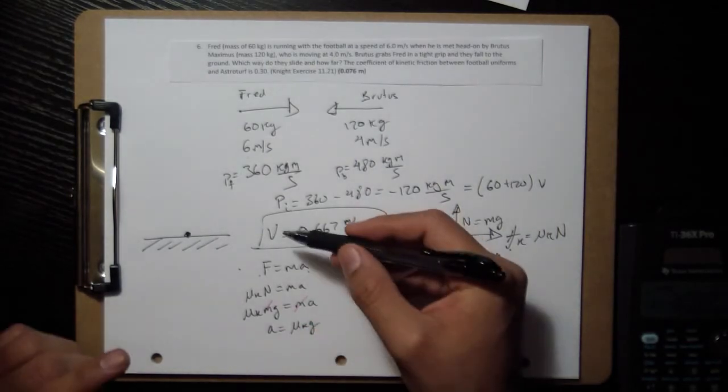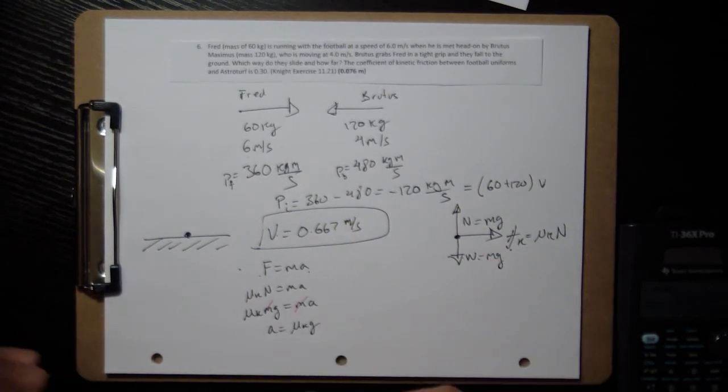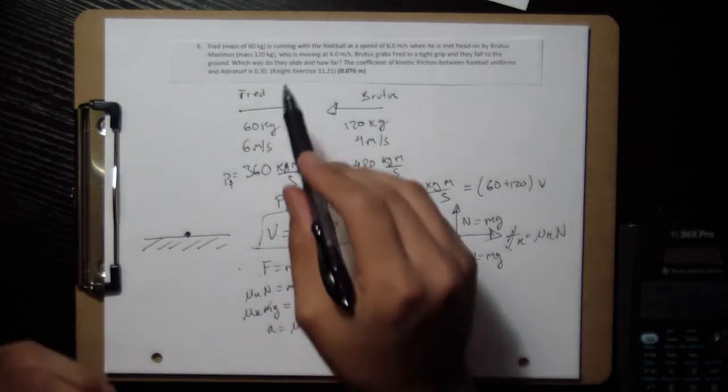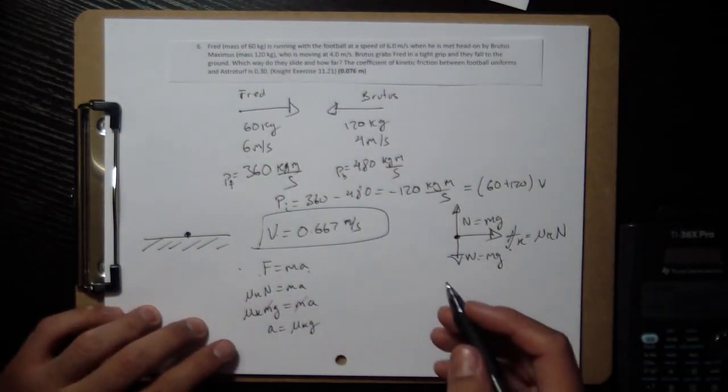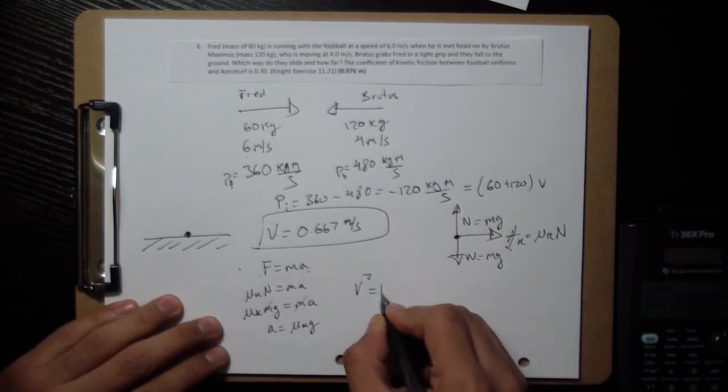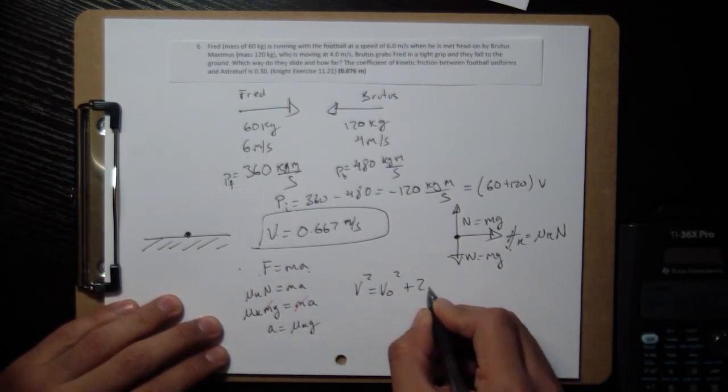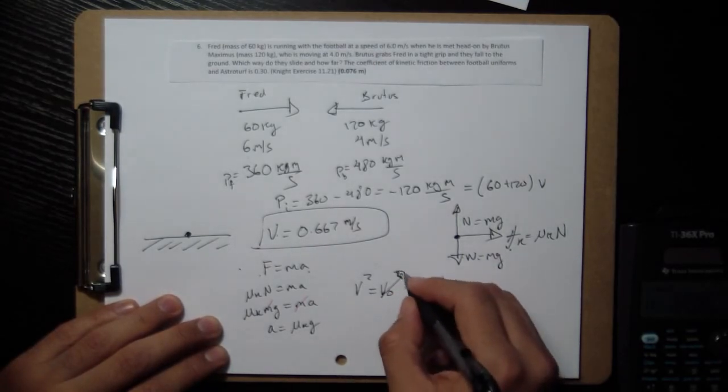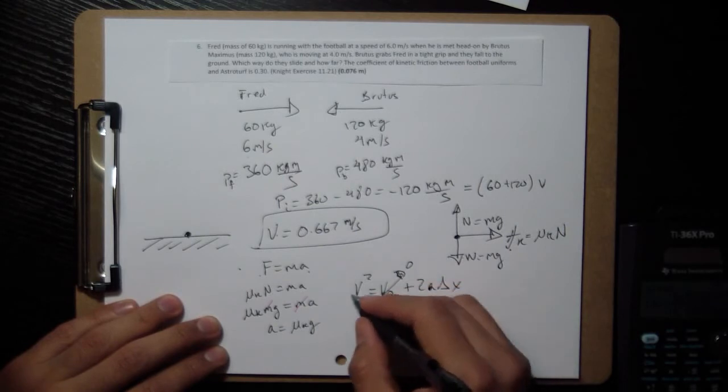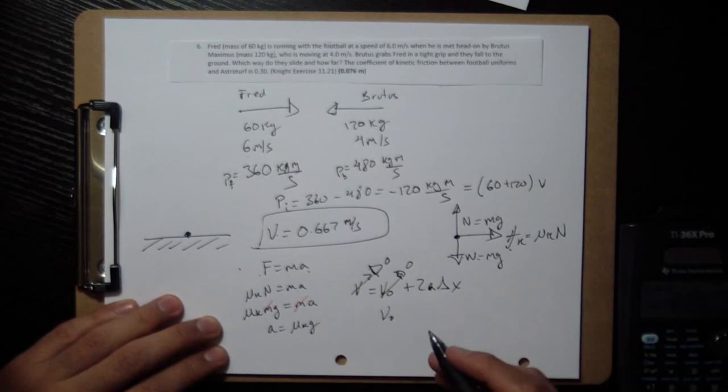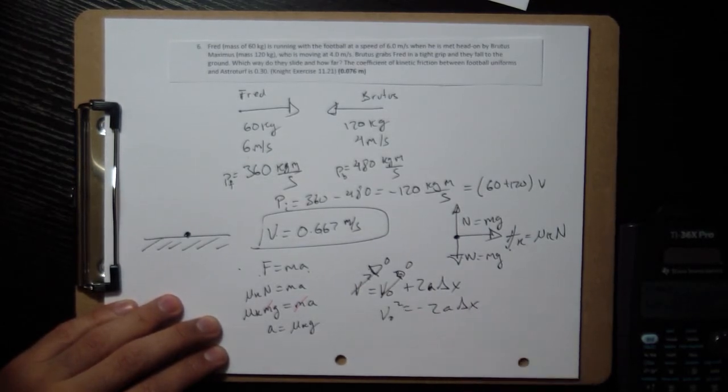And now that I have an initial velocity, an acceleration, and a final velocity because they're going to come to a stop, we can figure out how far they slide. There should be an equation that governs or relates the velocities, the acceleration, and the positions. This one is 0, the final velocity. This initial velocity is this number. So then this is equal to negative 2a delta x.